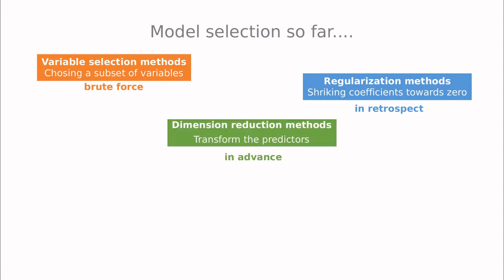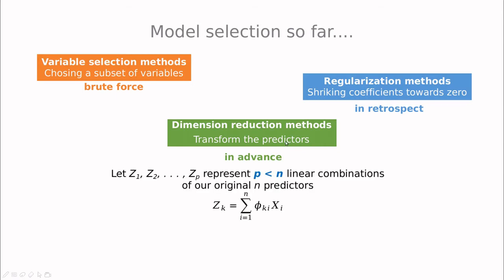Today we're going to discuss the third type of methods and I'm calling these methods in advance, because we're transforming the predictors to have better accuracy. So we're not choosing parameters, we're not letting the data tell us what parameters are more relevant. We're creating a new set of variables, a new set of predictors.